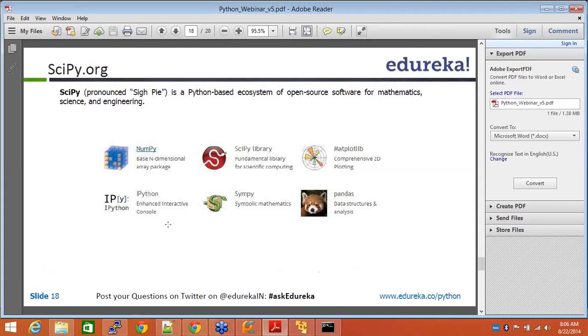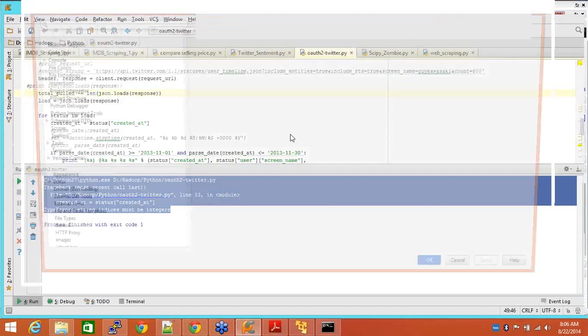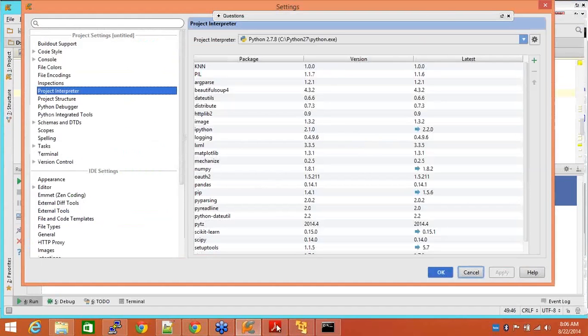There is Pandas, again, for data structures and analysis. These are just a few packages. And there is scikit-learn for machine learning, so on and so forth. There are a lot of packages which you have seen right now, which you saw in this one. These are only a few that we have listed here.